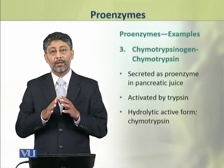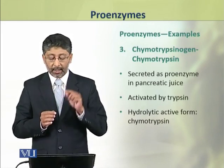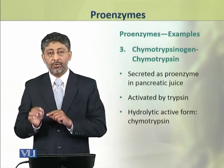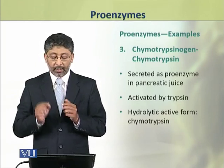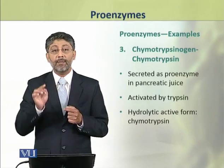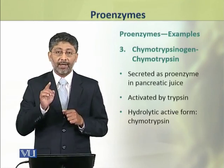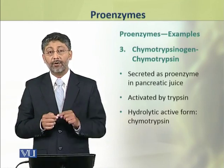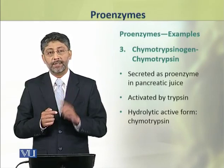The third example of a proenzyme is chymotrypsinogen, which is secreted as a proenzyme in the pancreatic juice. It is activated by trypsin, and its hydrolytic active form is chymotrypsin.